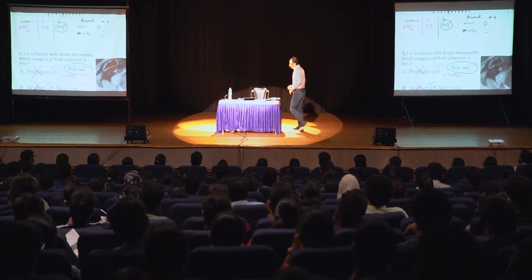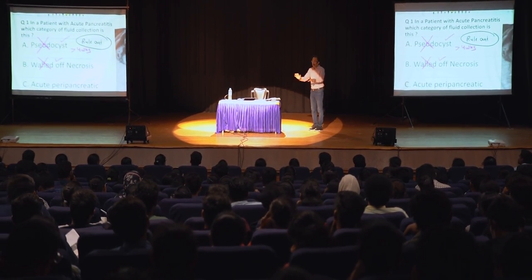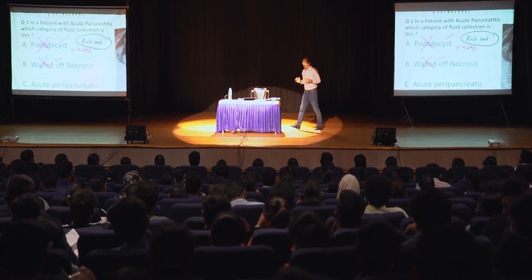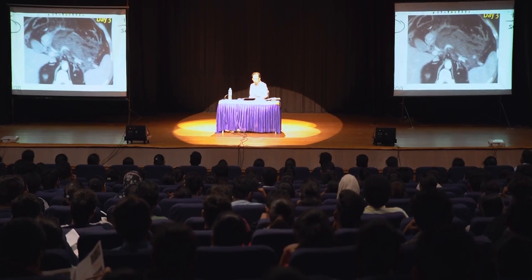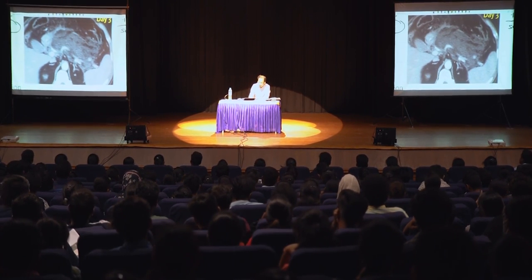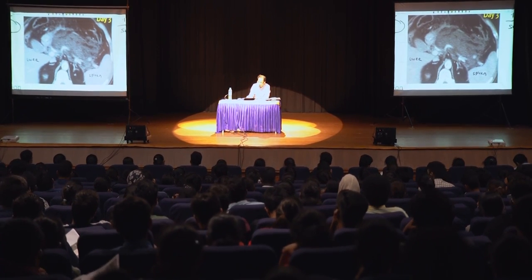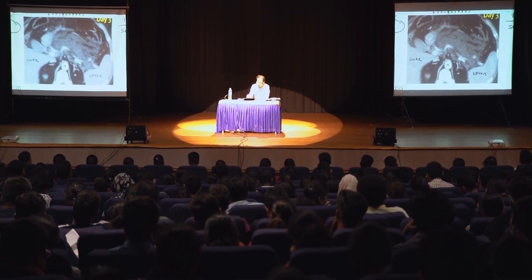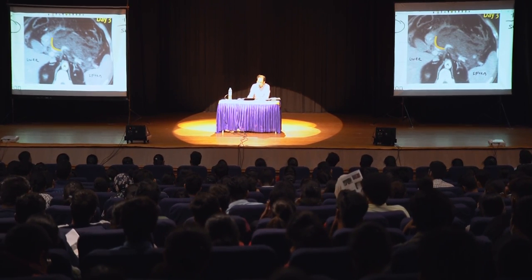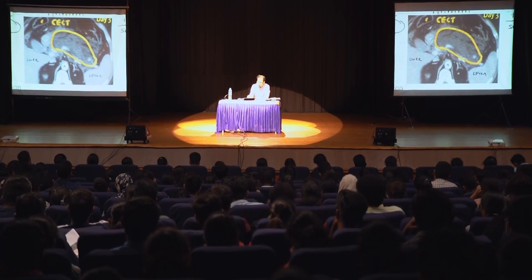Once you see these choices, you have ruled out two. Probability of getting it right: 50%. Should I go for zero or should I try for plus four? Let's think over it with this image. Is this a contrast CT or a plain CT? This is the liver, spleen, aorta. This is the diseased organ — the pancreas. This is a contrast-enhanced CT.